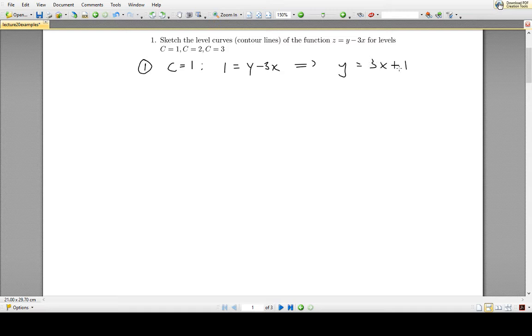So we can do the same thing for the other heights. For the contour 2, we substitute in z equals 2 and y minus 3x, and at the end of this we rearrange this just like we did before and we get y equals 3x plus 2, which again is a straight line with slope 3 but this time with y intercept of 2.